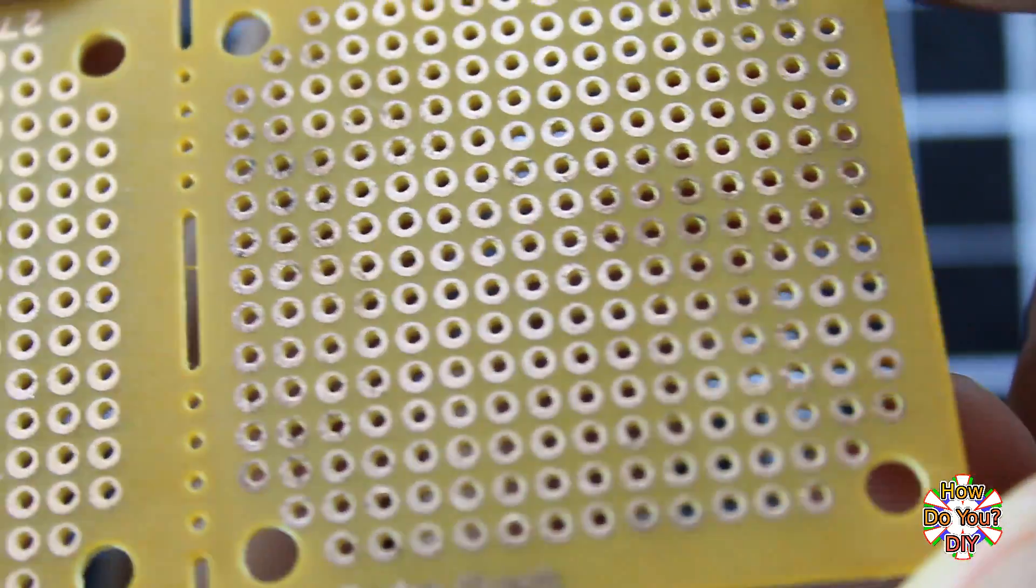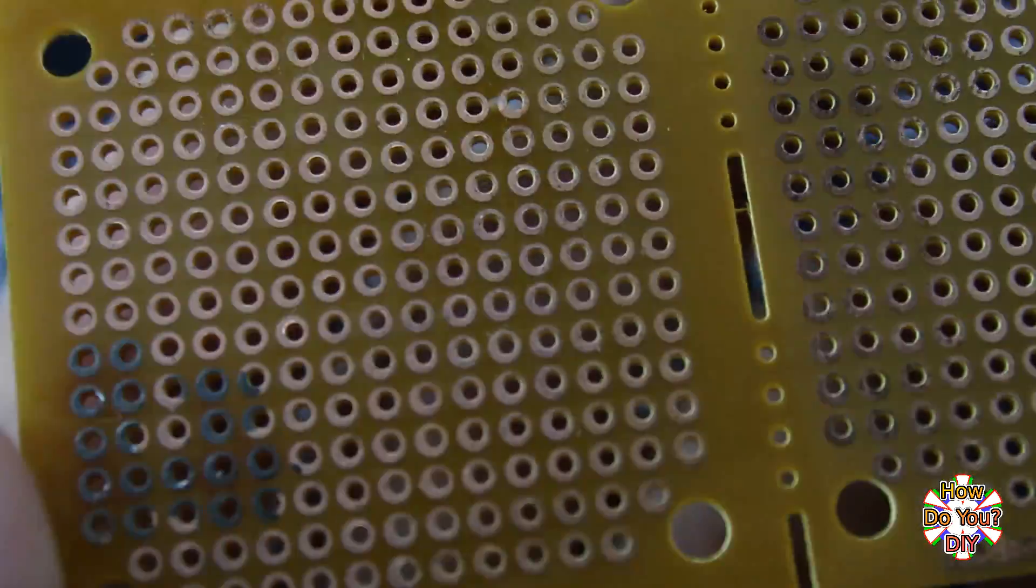It's basically a bunch of copper pads on circuit board material, usually on one side, but it can be on both sides.